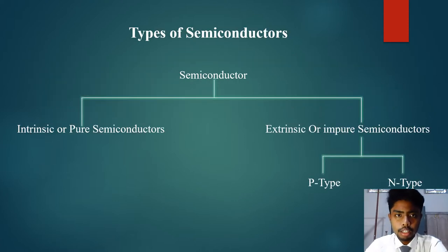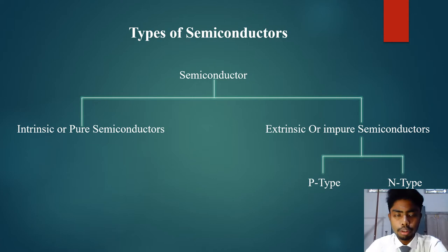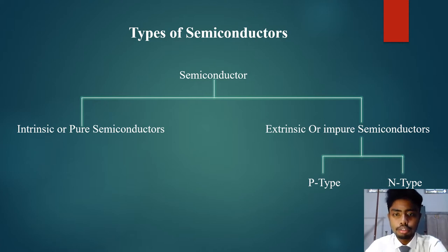Semiconductors can be divided into two types: the first is intrinsic or pure semiconductors, and the second is extrinsic or impure semiconductors. Extrinsic or impure semiconductors can be further divided into two types: P-type semiconductors and N-type semiconductors. Now we turn to the next slide on intrinsic semiconductors.